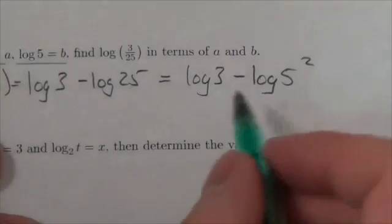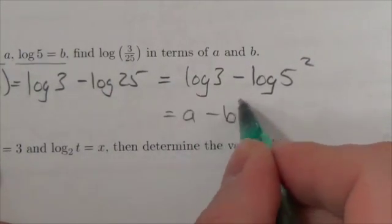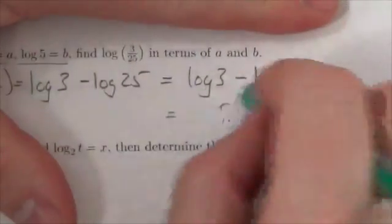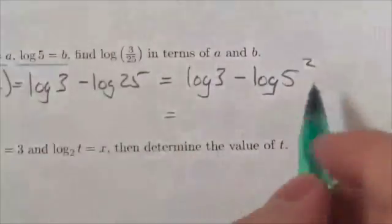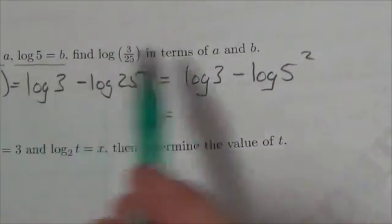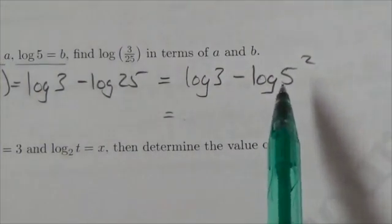Now, it might be very tempting at this point to say that's A minus B squared. But that's wrong. That's incorrect. Now, let's explain that. Because you might look at this and say, well wait a minute, it says the log of 5 equals B. Well, there it goes. Log of 5. I've got the squared there. So B squared.